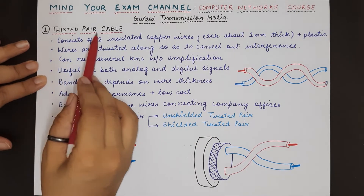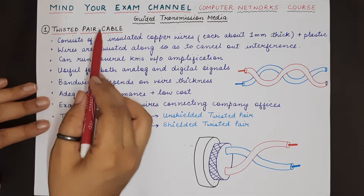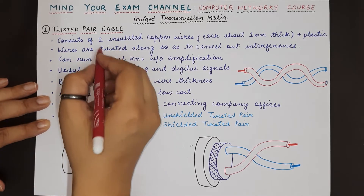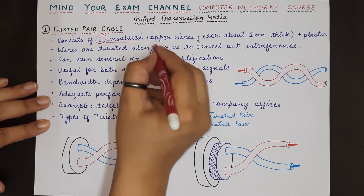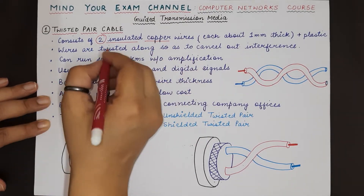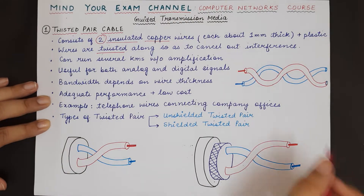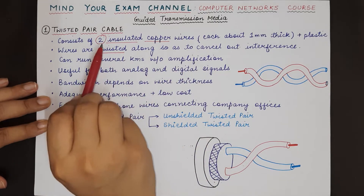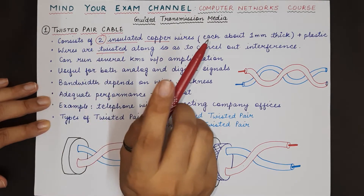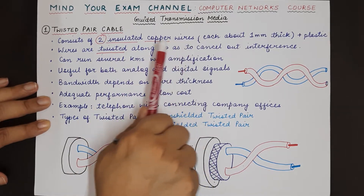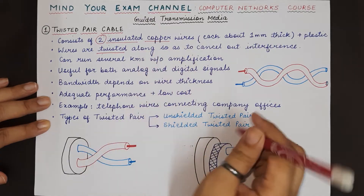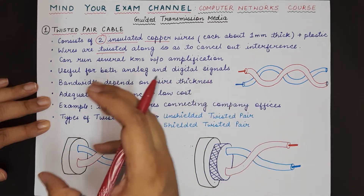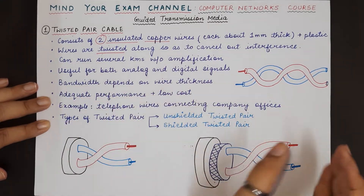As you can understand from the name, there are two terms: twisted and pair. The twisted pair cable basically consists of two insulated copper wires, and each of these wires are twisted one upon the other, just like this diagram I have shown here. Two important points to remember: twisted pair cable consists of two copper wires, and they are insulated. Insulation helps protect the human from getting affected by the current flowing through these wires.